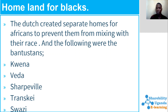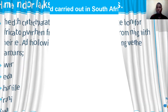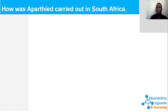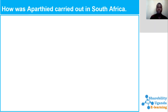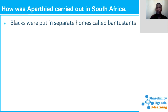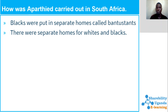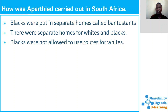Now we are going to see how apartheid was carried out in South Africa. Blacks were put in separate homes called Bantu stances. There were separate homes for whites and blacks. Blacks were not allowed to use roads designated for whites. Blacks were not allowed to move out from their homes without passes or identity cards.